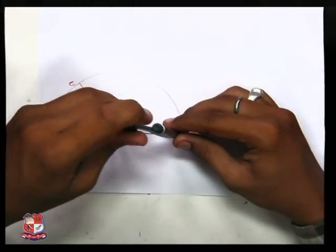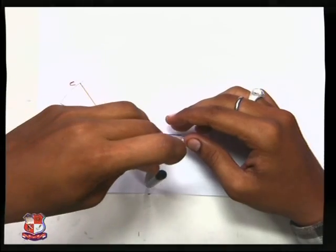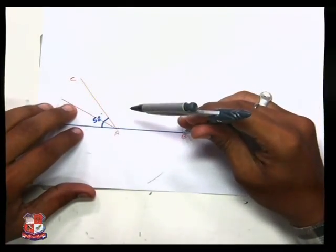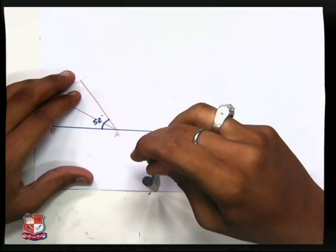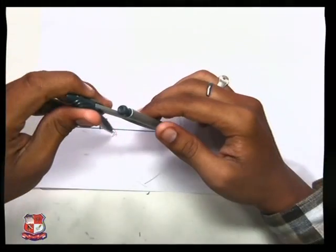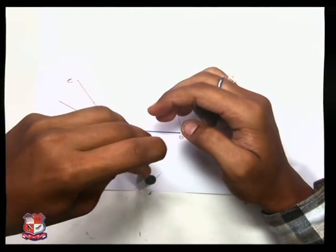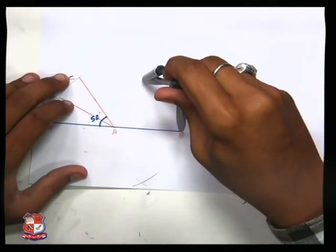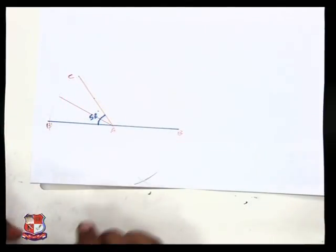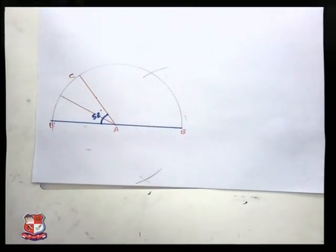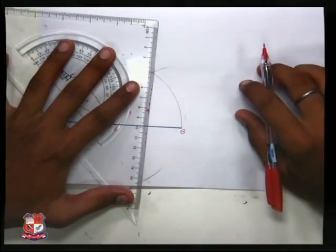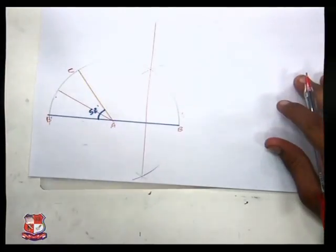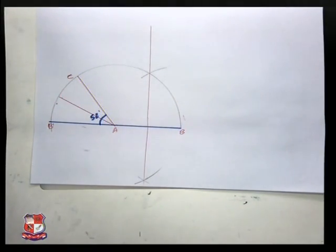Now I need the bisector of AB and AC. I have got the bisector of AB. Extend this as a projection line. It should be very light.